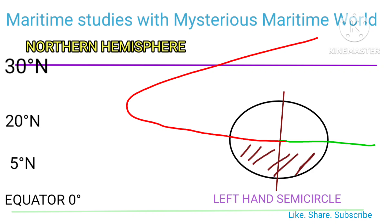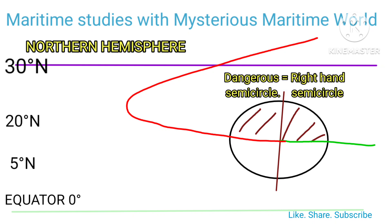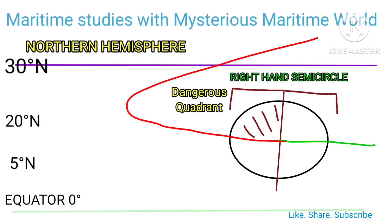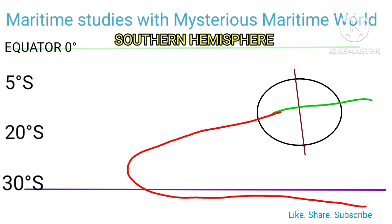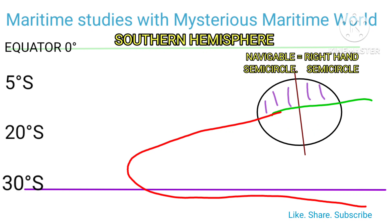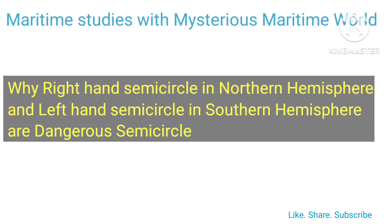Left-hand semicircle: that half of the storm which lies to the left of an observer facing along the path of the storm. Right-hand semicircle: that half which lies to the right. In the Northern Hemisphere, the dangerous semicircle is the right-hand semicircle and the navigable semicircle is the left-hand semicircle; the dangerous quadrant is the advanced quadrant of the right-hand semicircle. In the Southern Hemisphere, the dangerous semicircle is the left-hand semicircle, the navigable semicircle is the right-hand semicircle, and the dangerous quadrant is the advanced quadrant of the left-hand semicircle.